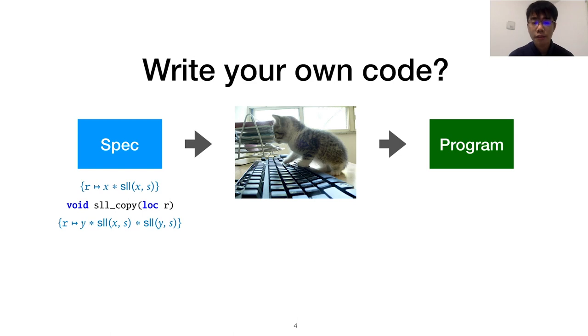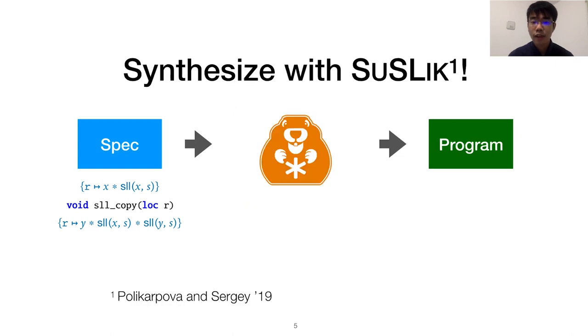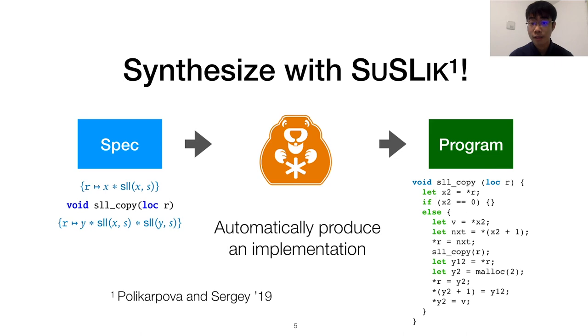At this point, any other developer would roll up their sleeves and start coding. But you know better than that. Instead, you feed the specification to Syslic, a program synthesizer that can automatically produce an implementation from a user specification. And voila! You get a list copying program.